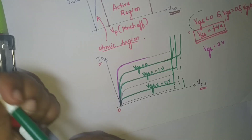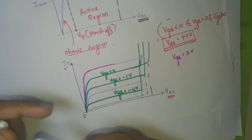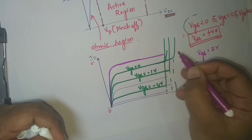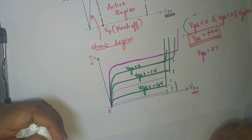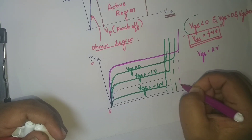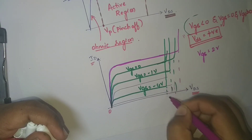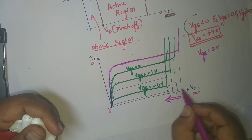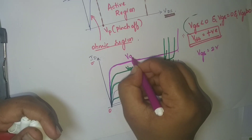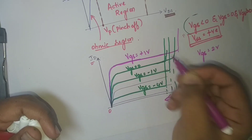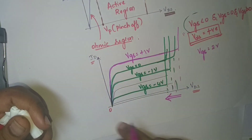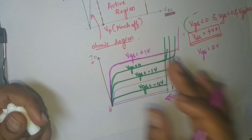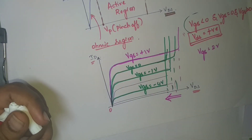When I increase VGS above 0 — that is, VGS greater than 0 — I again have ohmic region, active region, and breakdown region. If you observe carefully, the breakdown voltage decreases as you decrease VGS, and it increases as you increase VGS. For example, VGS positive at plus 1 volt shifts the breakdown voltage higher. This is the explanation of the drain characteristic of JFET.